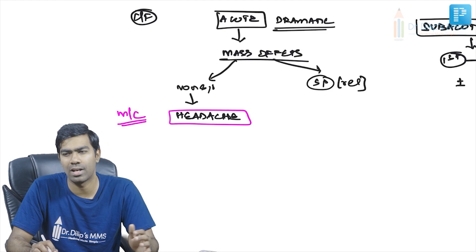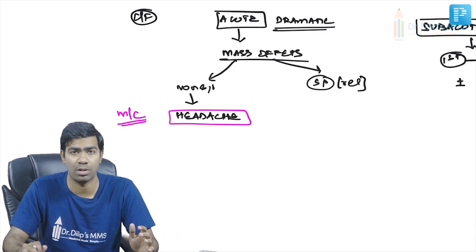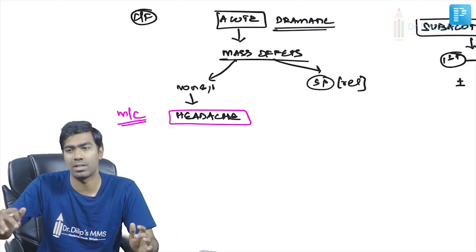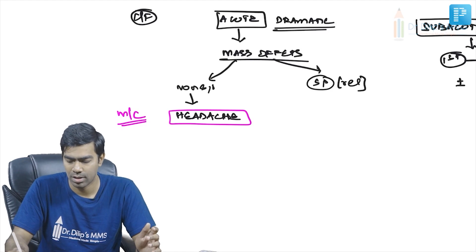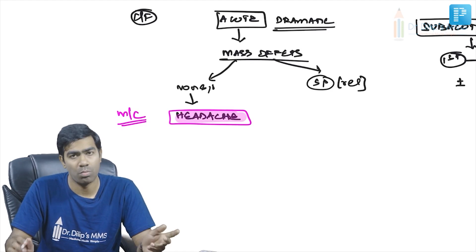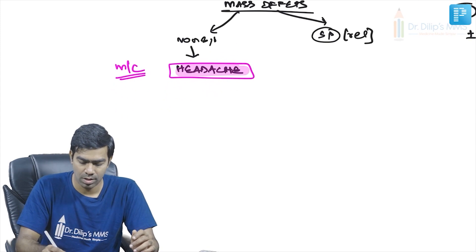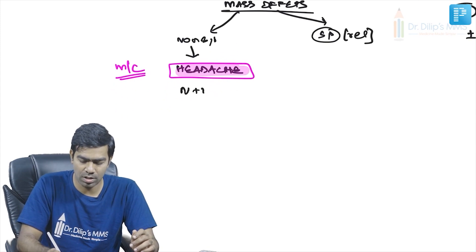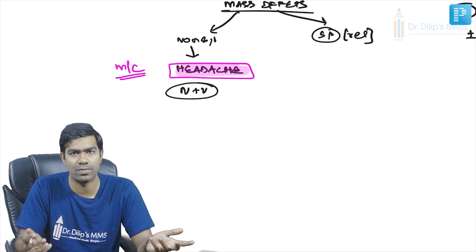In apoplexy, the most common clinical feature is sudden acute-onset headache — not seen in Sheehan syndrome at all. Patients may also have nausea and vomiting due to raised intracranial pressure.